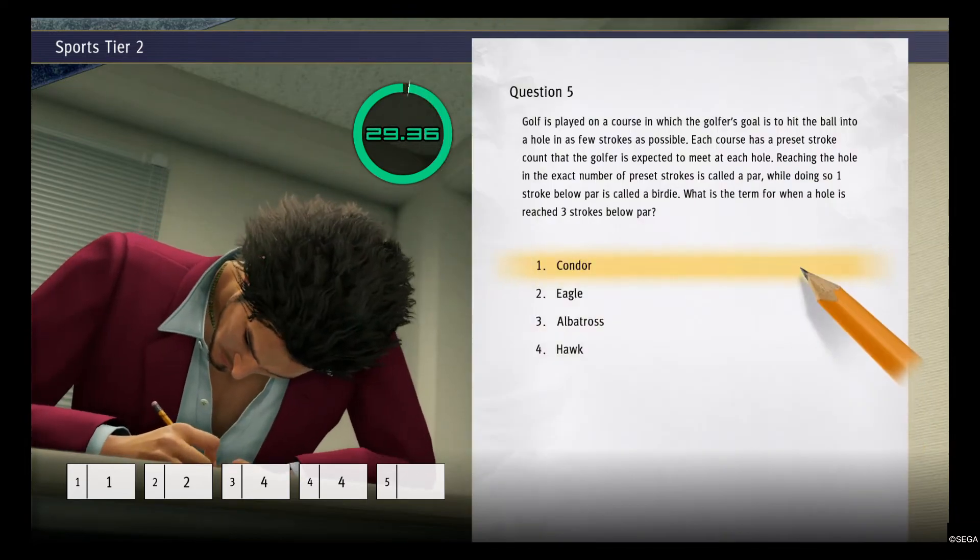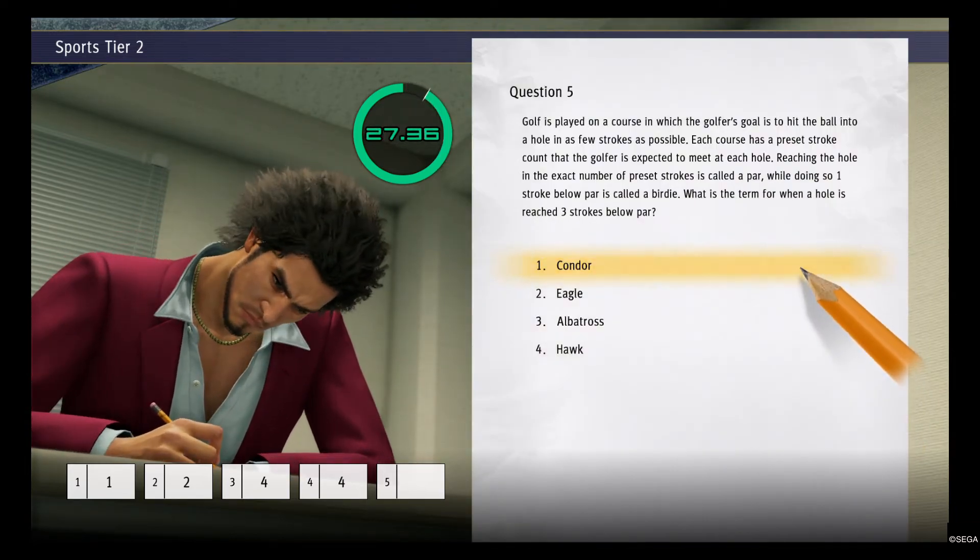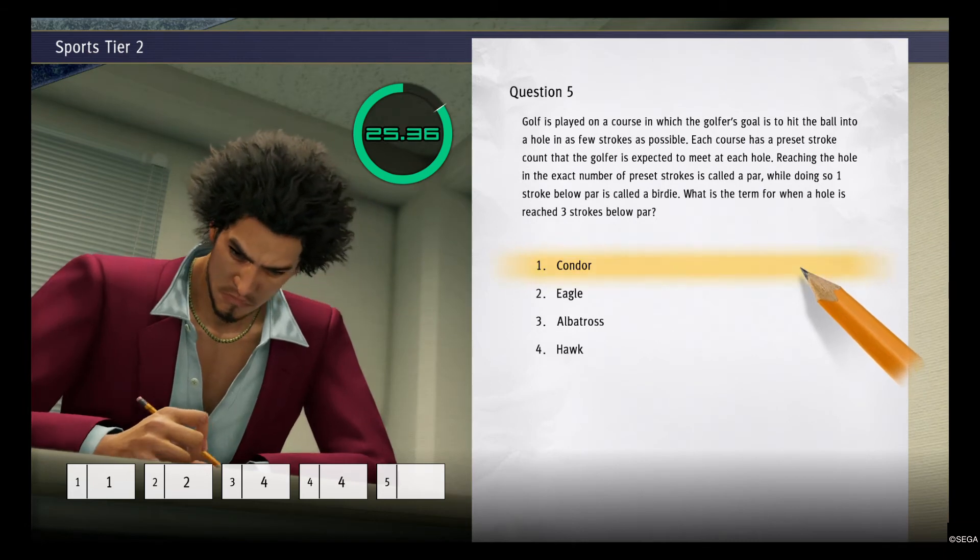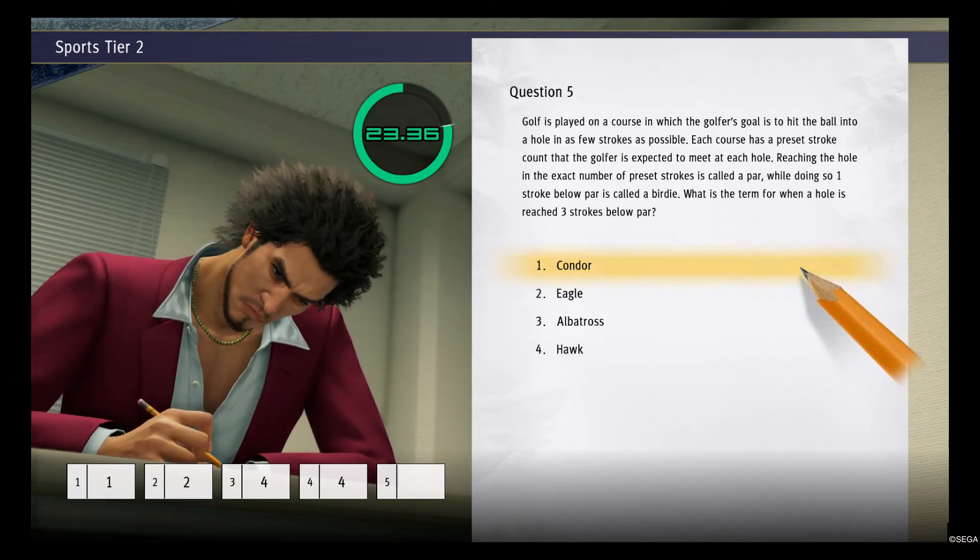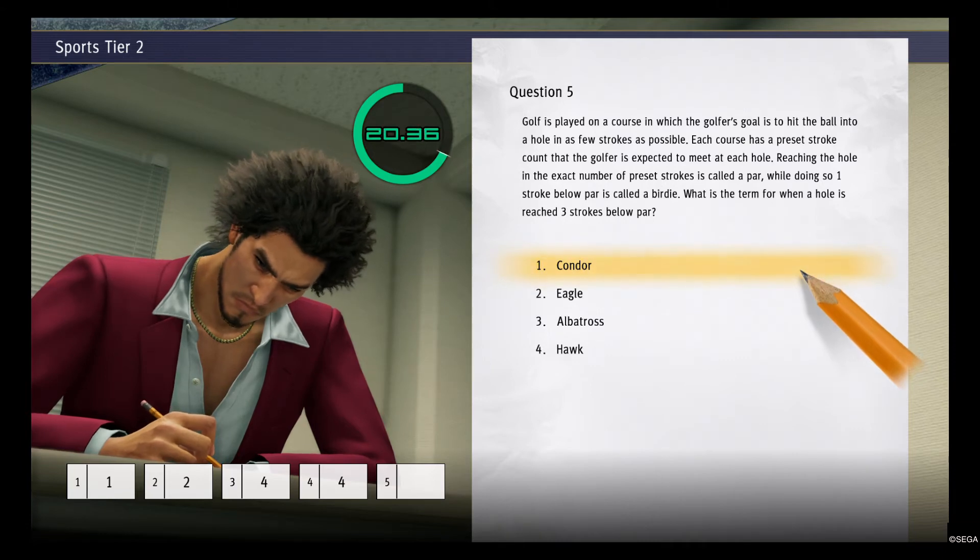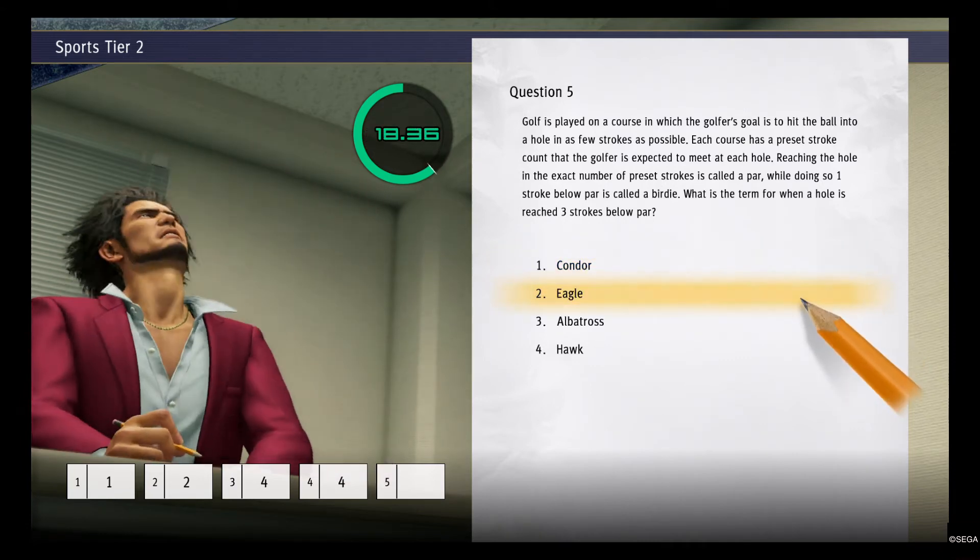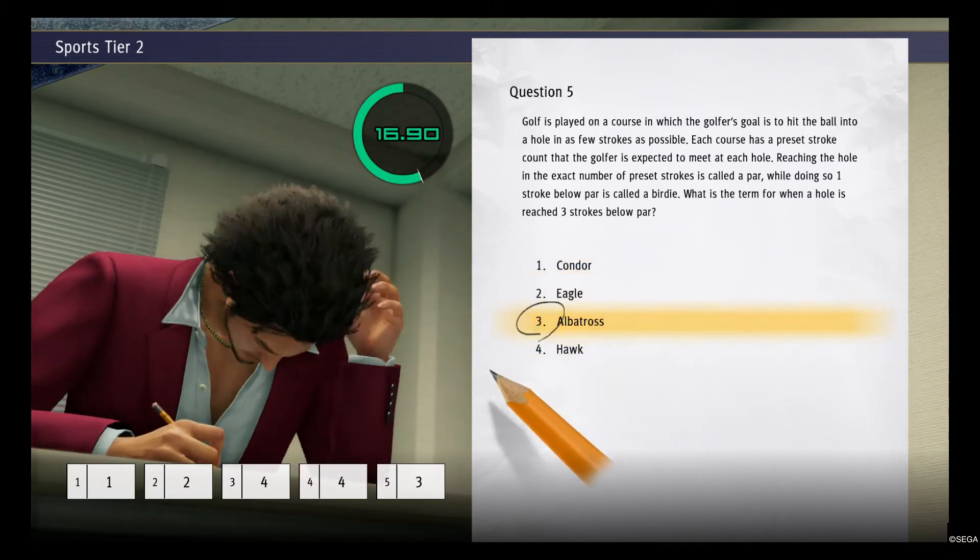Use a pair. Golf. Wait. Reaching the holes. What is the term for a hole reached in three under par? Condor, Eagle, Albatross, Hawk. Albatross, I think.